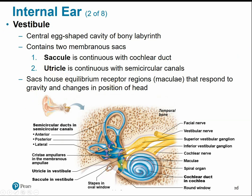The vestibule is the central egg-shaped portion of the inner ear containing two membranous sacs. The saccule is continuous with the cochlear duct — the hearing portion of the inner ear. The utricle is continuous with the semicircular canals — the balance and equilibrium side of the ear.